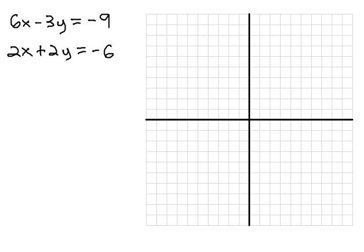In this video, we're going to look at solving another system by graphing. We're going to solve 6x minus 3y equals negative 9, and 2x plus 2y equals negative 6.